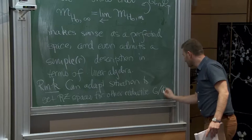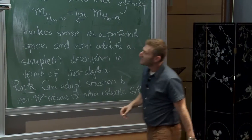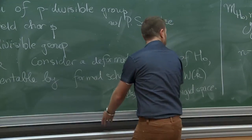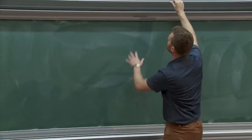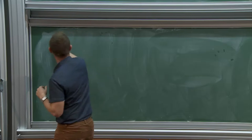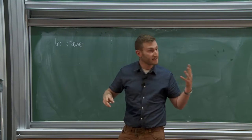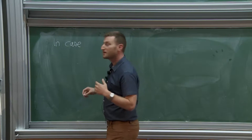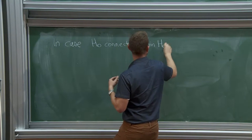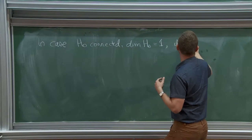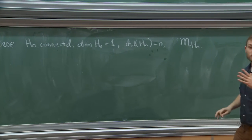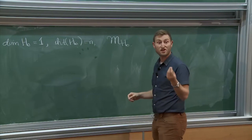You can also adapt the situation to get Rapoport-Zink spaces at infinite level for other reductive groups G over ℚ_p. I'll spend a little time at the end considering the Lubin-Tate case — meaning the simplest possible H₀, where H₀ is connected and one-dimensional with height N. In that case, M(H₀) without any level structure is an open ball of dimension N minus one.